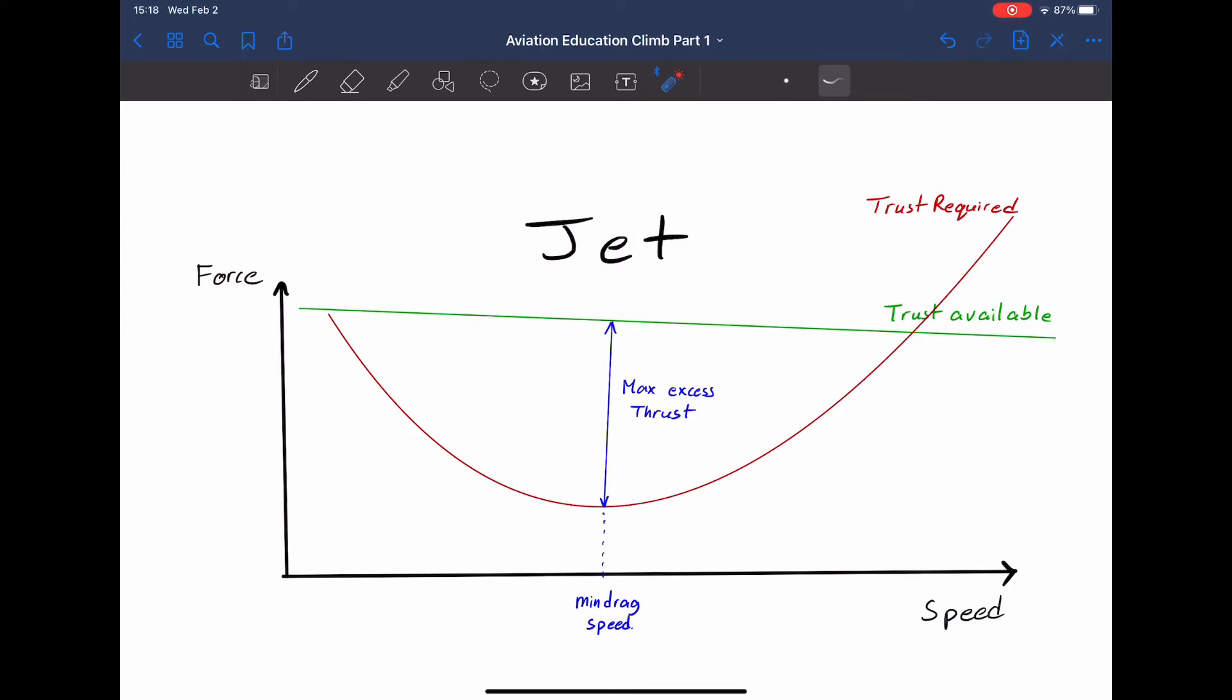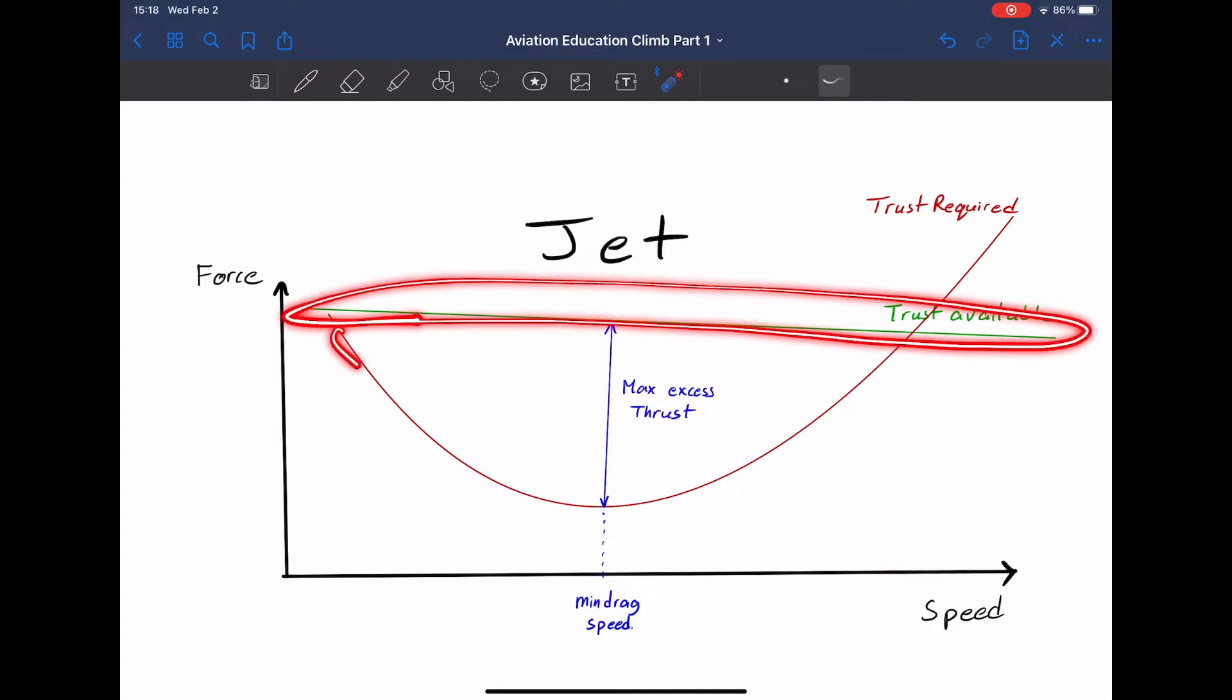In order to get a deeper understanding of how excess thrust affects an aircraft's climb angle, let's take a look at a drag curve. This is a very typical drag curve for a jet airplane. In red, you have the thrust required, and in green, you have the jet engine's thrust available. Excess thrust is the area found between the thrust available and the thrust required line.